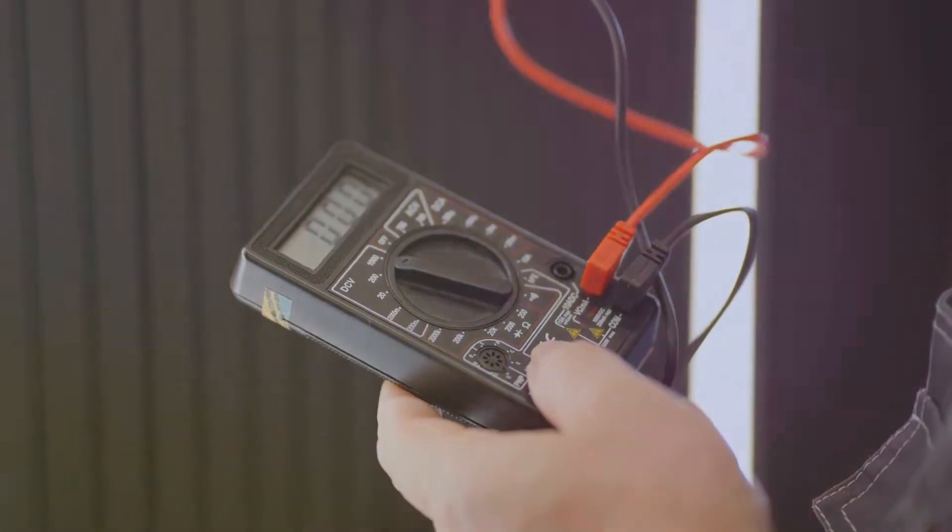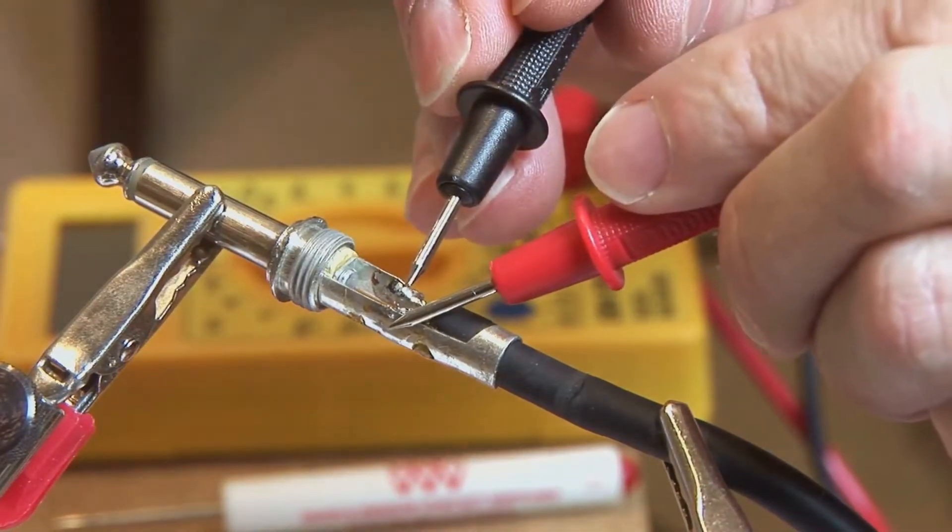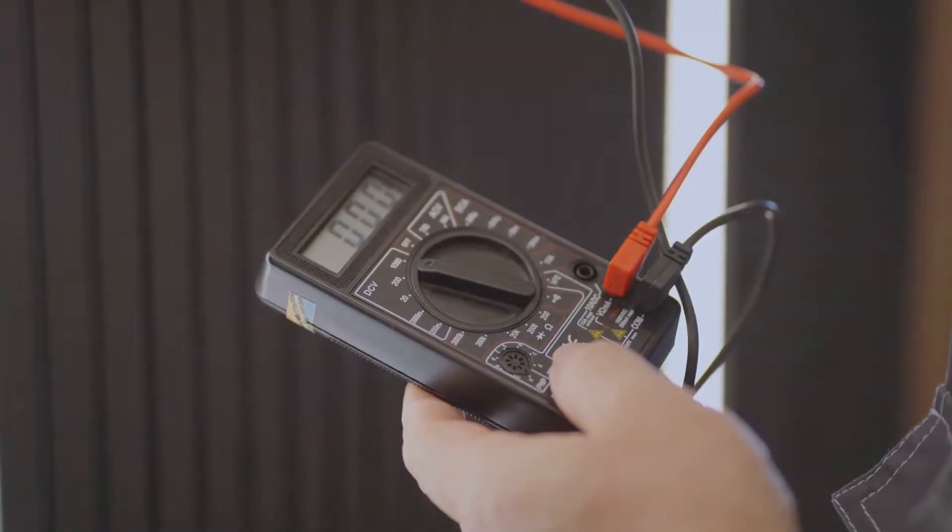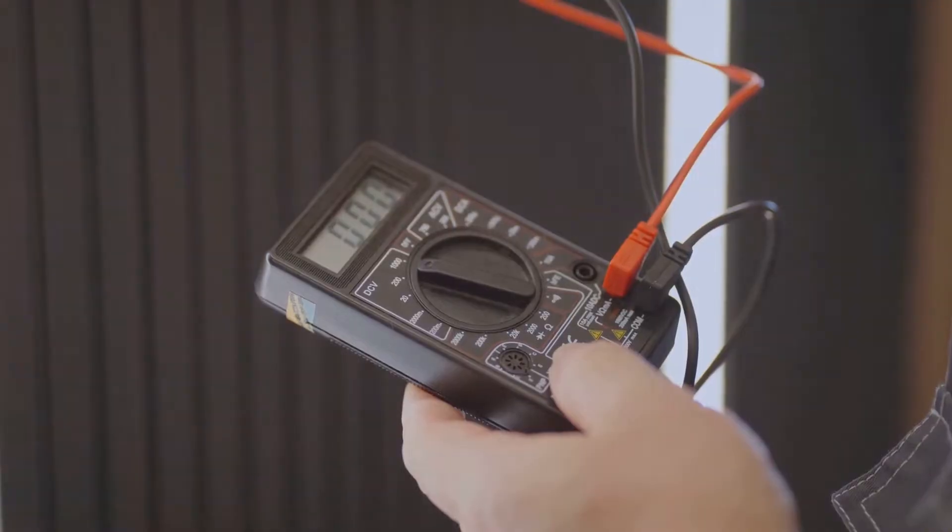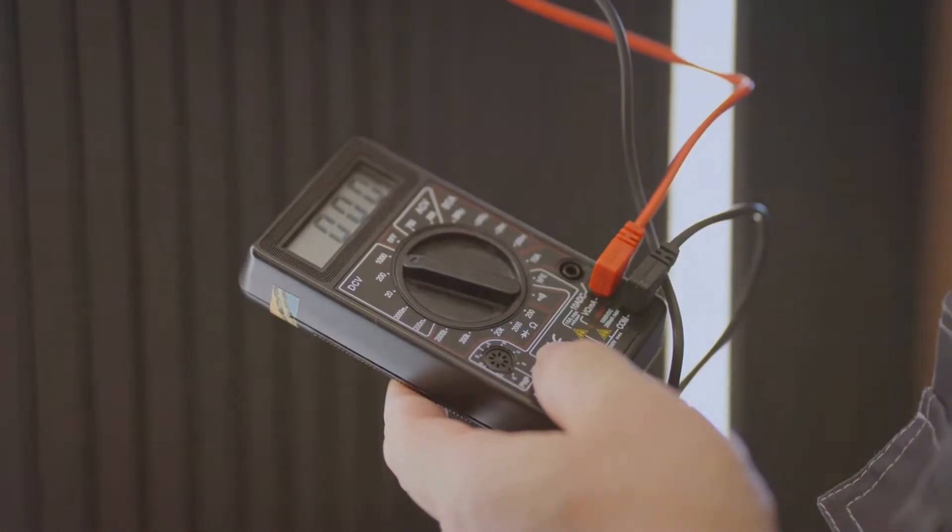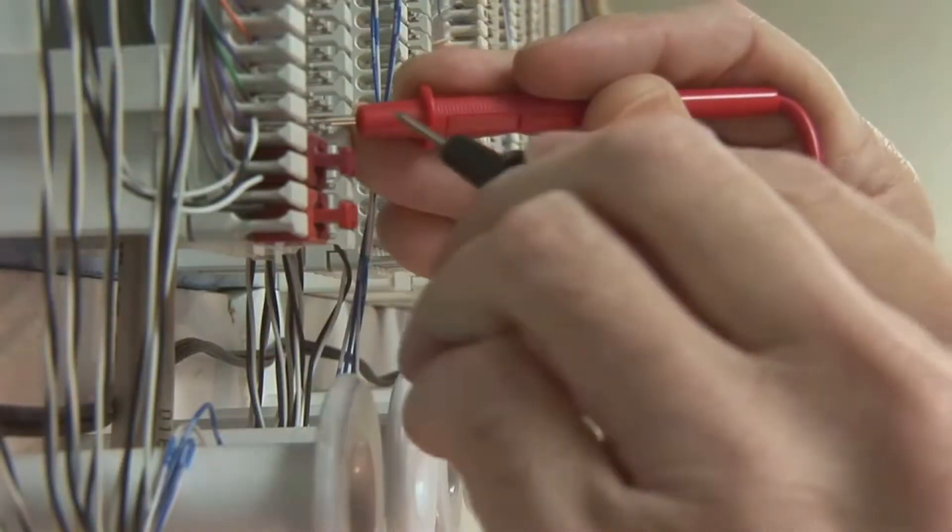Before you start poking around with your multimeter, make sure the solenoid is disconnected from any power source - safety first. Now let's set up our multimeter. First, turn the dial to the resistance setting, usually marked by the Greek letter omega. Next, plug the black probe into the COM port, then plug the red probe into the port labeled for resistance, usually also marked with omega.